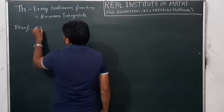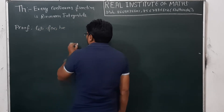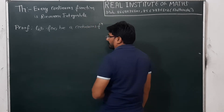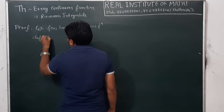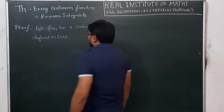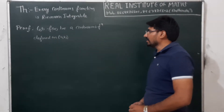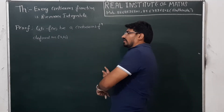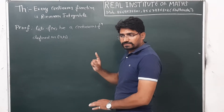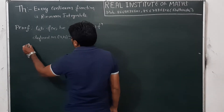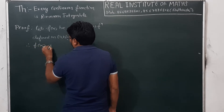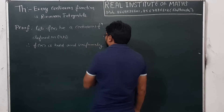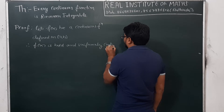First of all, let f(x) be a continuous function defined on the interval [a, b]. Now, f(x) is a continuous function defined on the closed interval [a, b]. We know that every continuous function on a closed interval is bounded and it is uniformly continuous. So therefore, f(x) is bounded and uniformly continuous on [a, b].